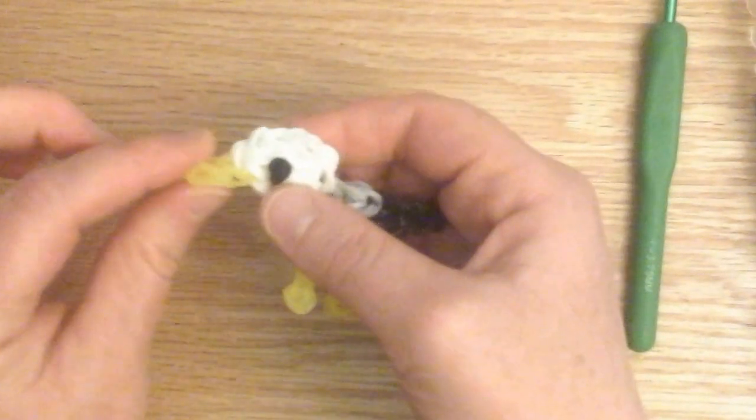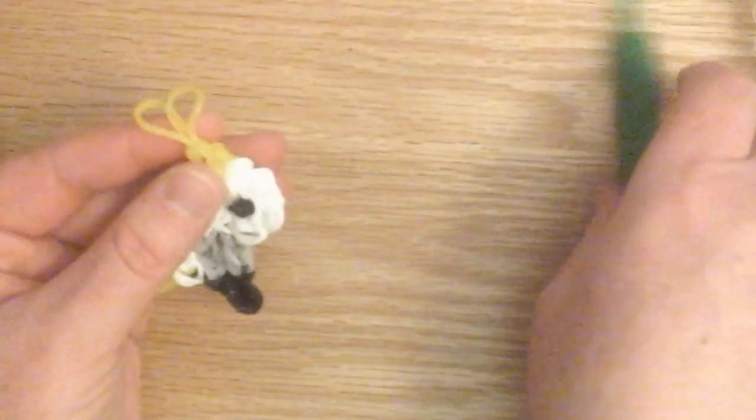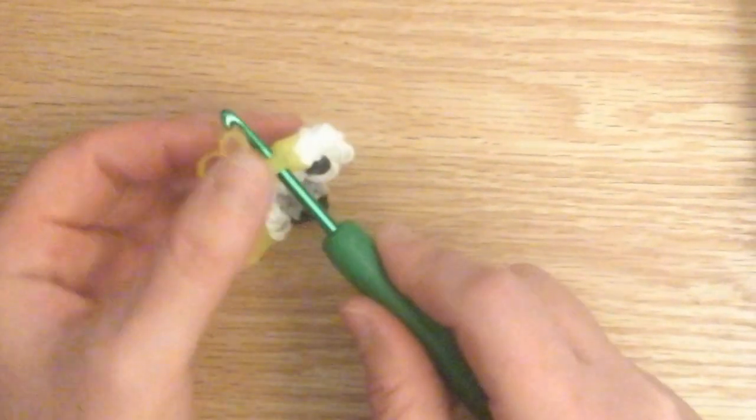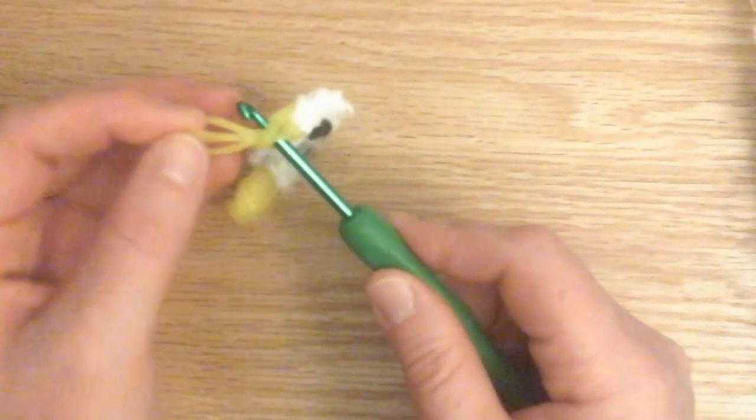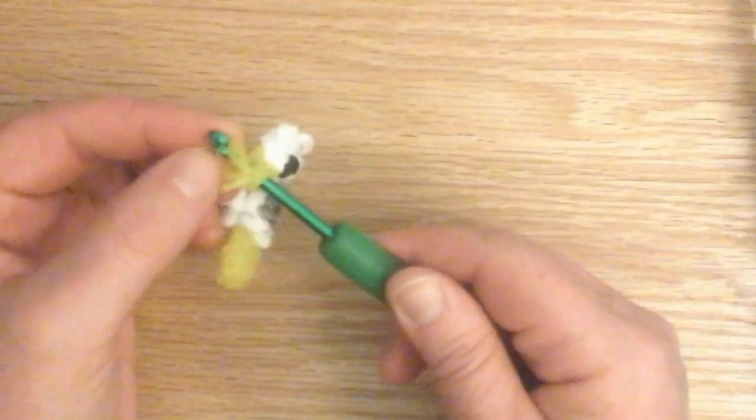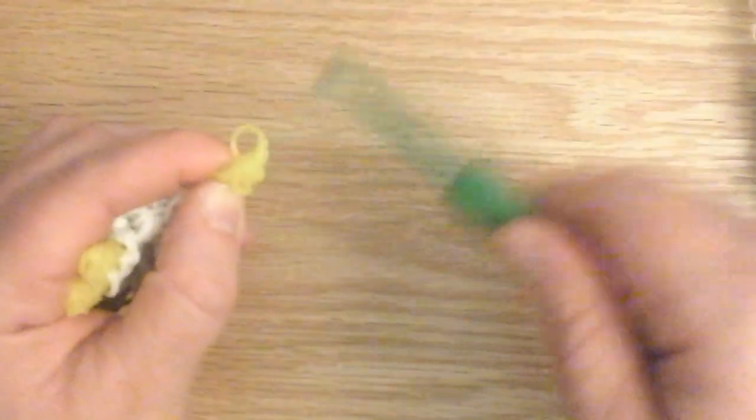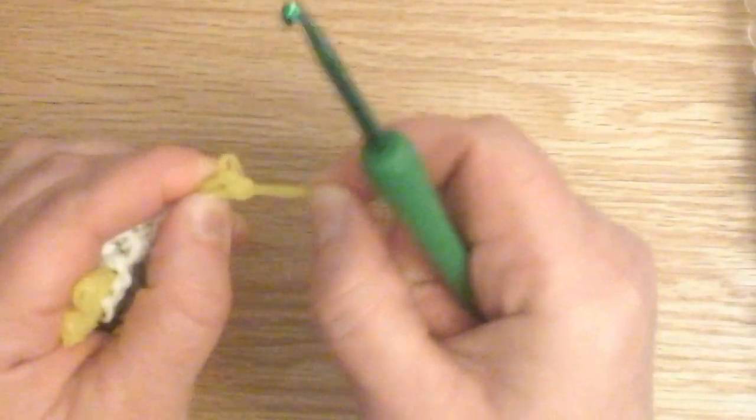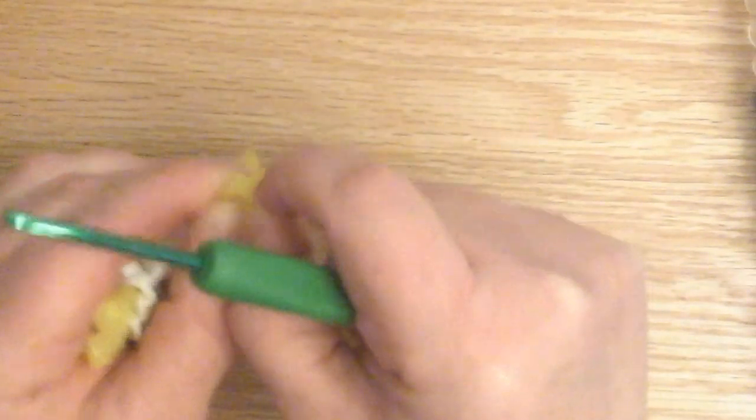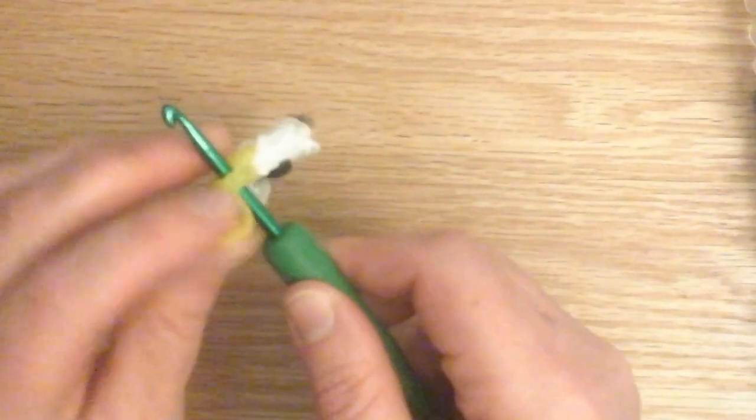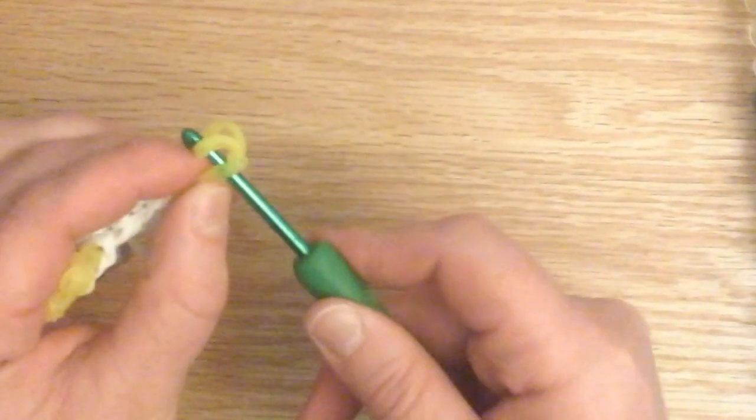To make the beak more pointy, place the hook right in this area. Pull it through. One more time.